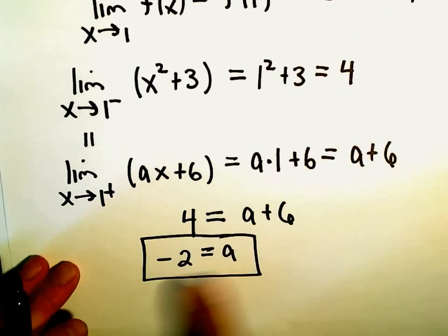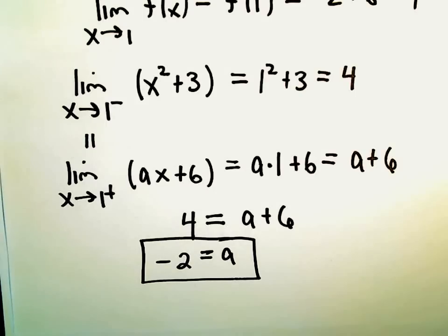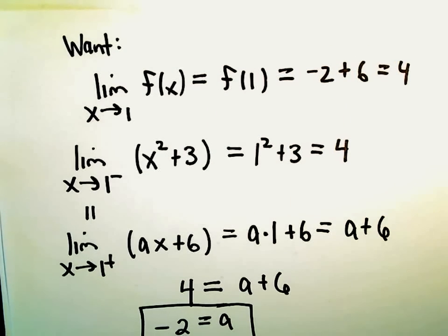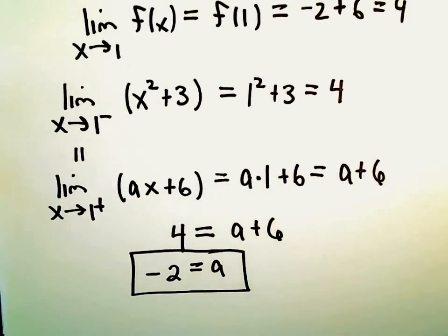So it says if we make a equal to negative 2, the limits will exist. And by default for this particular function, it'll also give you the correct value. So really kind of, I think, in a sense to do the problem, you just need to set the left-hand limit equal to the right-hand limit, and solve it.